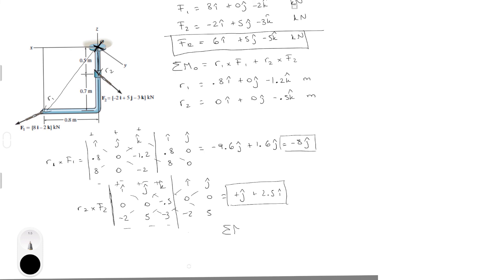So the sum of the moments are on point O. Just got to add these two together. And you're going to get 2.5 in the i minus 7 in the j. And there's nothing in the k.